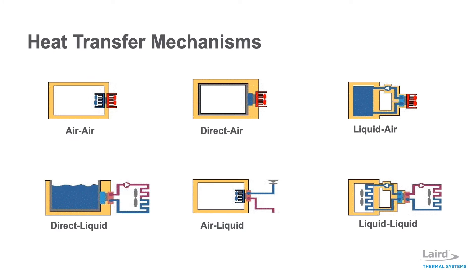Standard thermoelectric cooler assemblies use heat transfer mechanisms designed to absorb and dissipate heat by convection, conduction, or through liquid heat exchangers. Here you see the six heat transfer mechanisms available for absorbing and dissipating heat. In this training module, we will focus on the three most commonly used mechanisms: air-to-air, direct-to-air, and liquid-to-air.